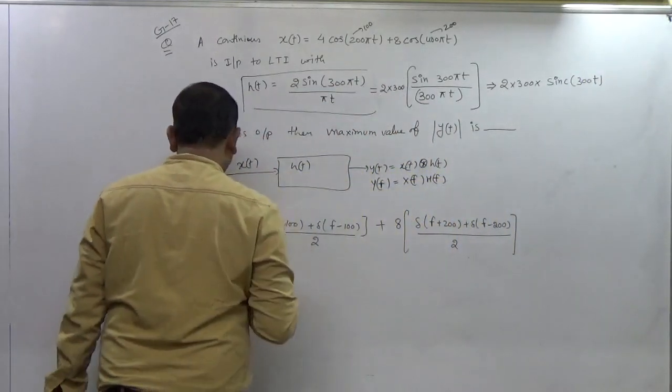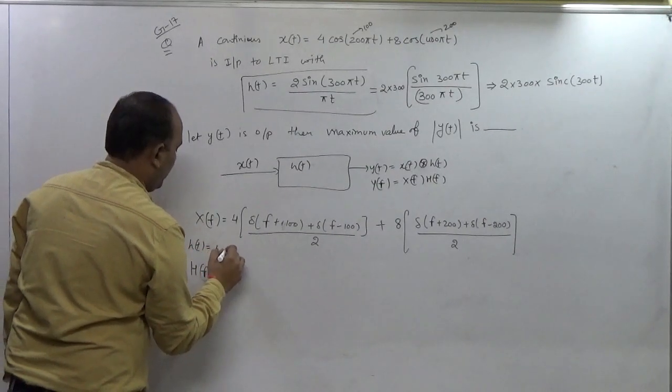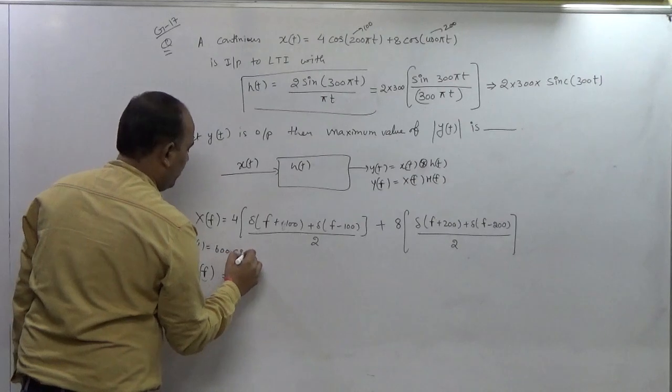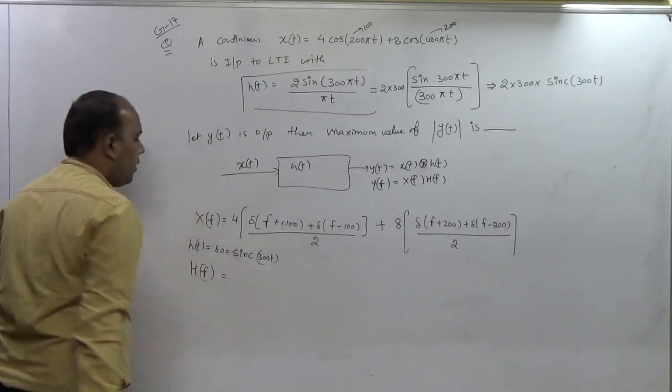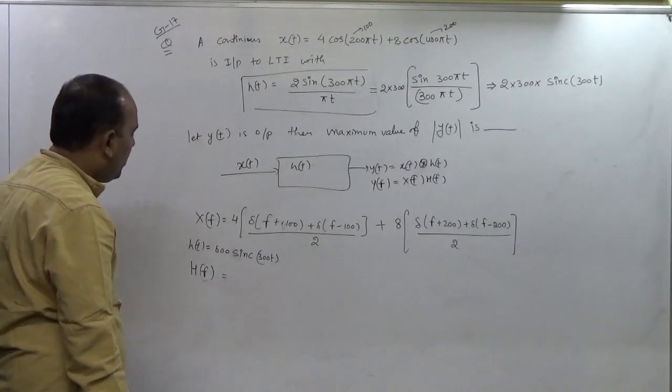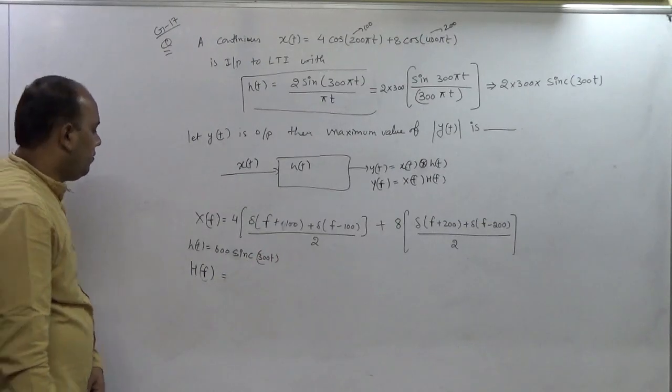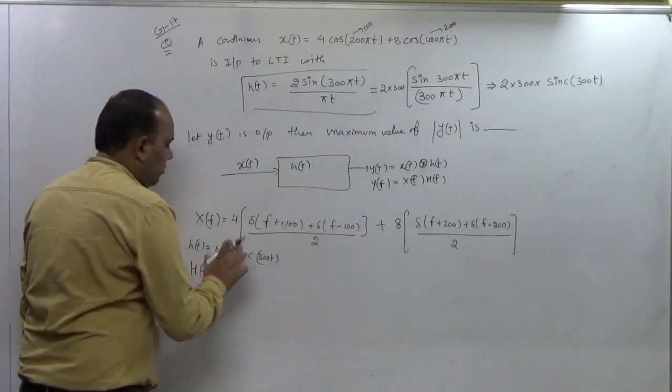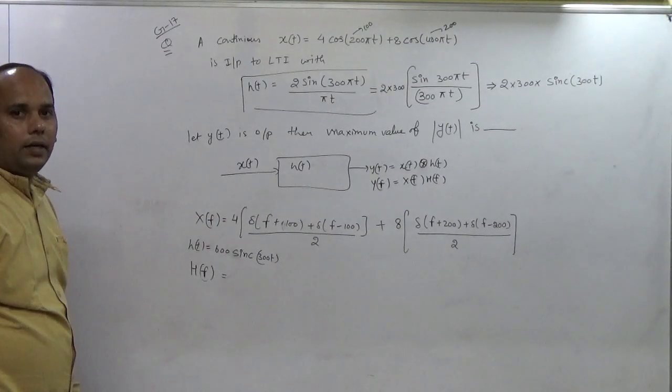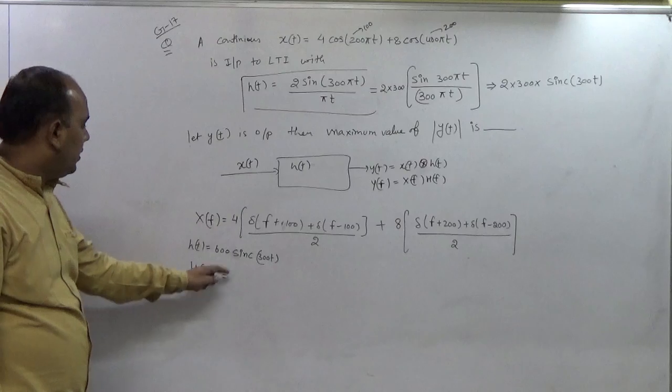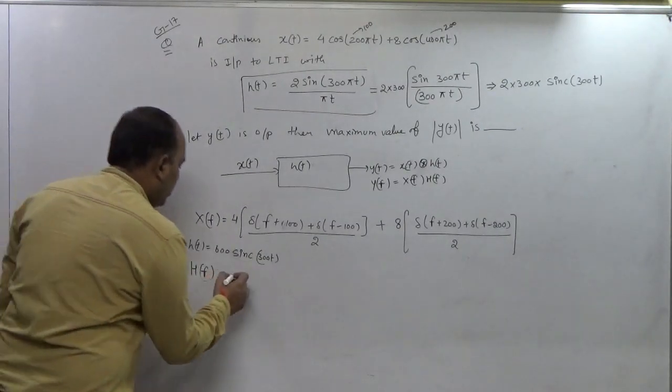So the main thing is this: we are having 600 sinc(300t). So its Fourier transform will be, because in the previous videos we have discussed about the sinc function. Basically the Fourier transform of sinc(t) is rectangle(f), and when sinc(τ) is there then it will be divided by τ. So that will be 600, and when we take the Fourier transform, this 300 will be divided.